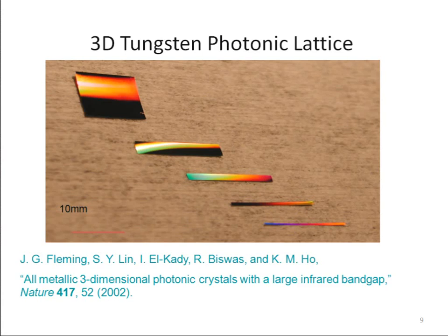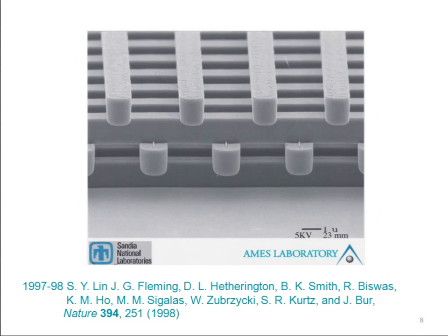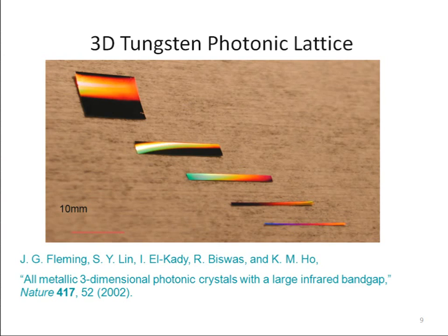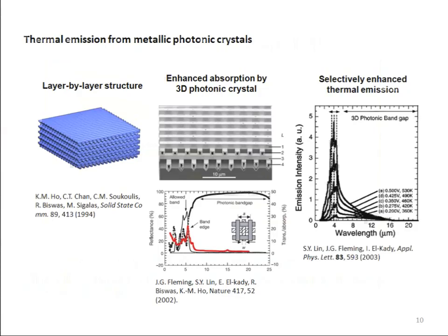It is not just about putting together a structure — you can actually change the material of the structure. You can do a process called inversion, where you use the structure as a template and then build other structures within it. One example is that you can turn silicon by this process into tungsten. Silicon is brittle so crystals have to stay on the substrate, but a metal is ductile and can actually be peeled off as filaments — you can have this metallic photonic crystal filament peeled off from the substrate.